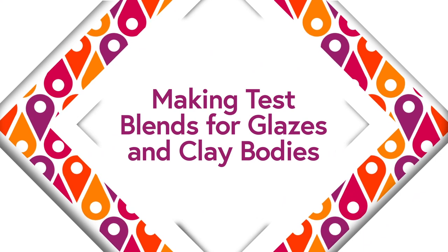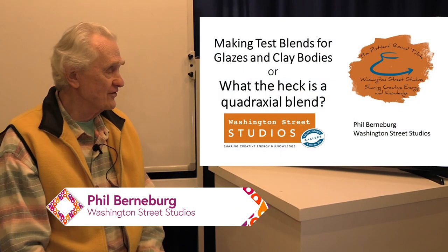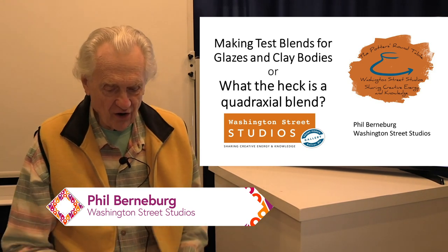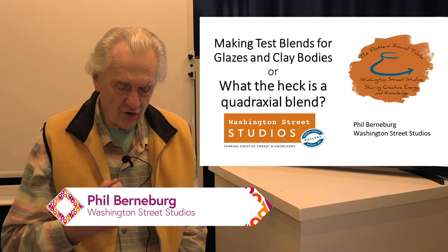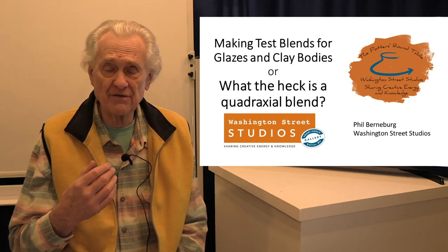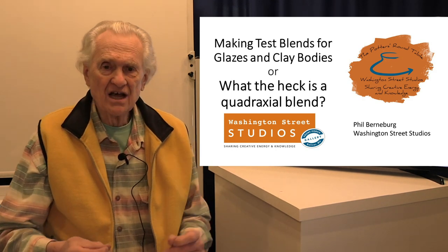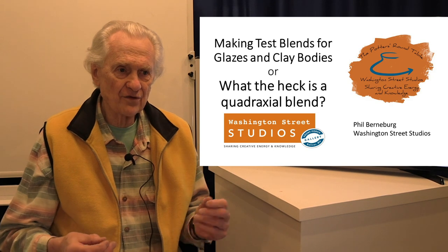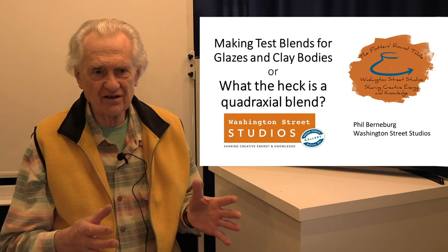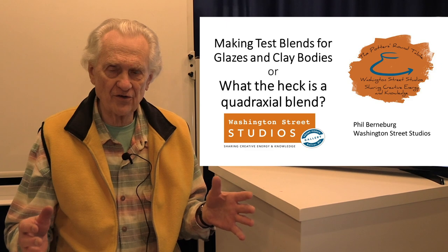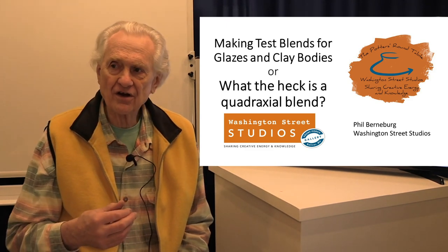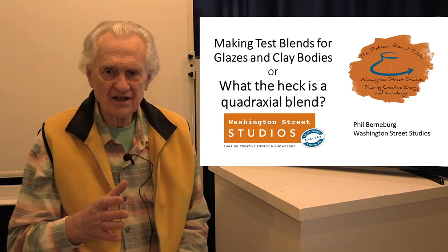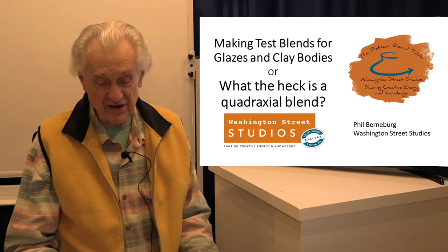Today's topic is making test blends for glazes and clay bodies, or the subtopic is: what the heck is a quadraxial blend? The whole point of this talk is that when you're changing glaze recipes or clay bodies, or developing completely new ones, you need some kind of system for keeping track of your samples and organizing them to cover all the different combinations of materials you're working with. We'll be talking about different methods for record-keeping or diagramming your tests.